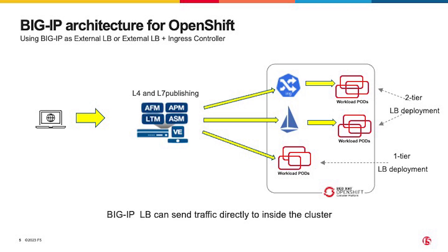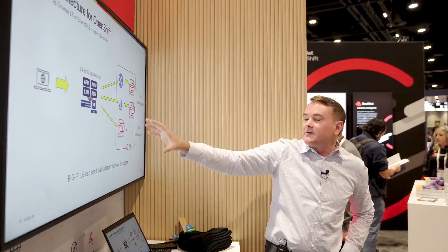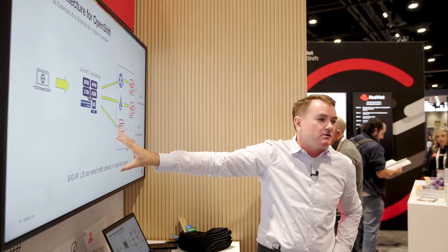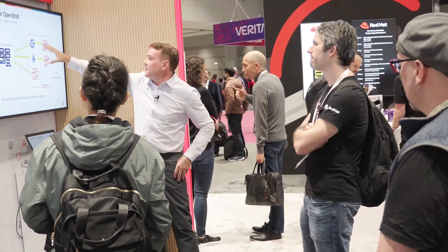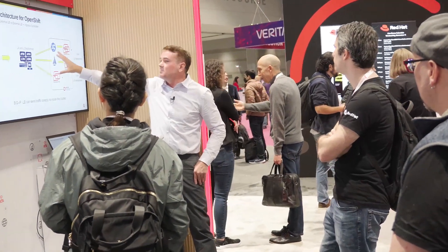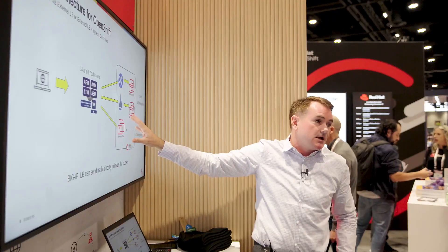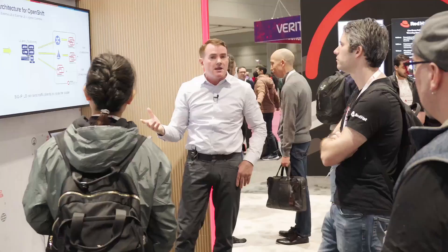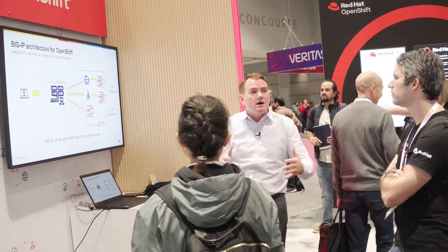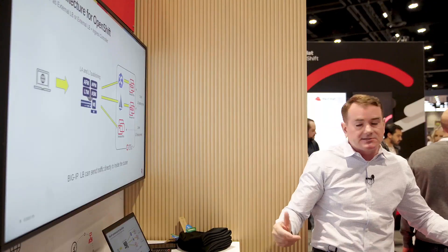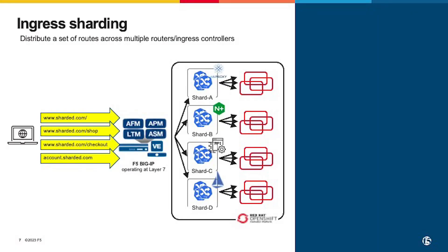A two-tier architecture separates the NetOps and DevOps personas. A limited subset of API calls manages the Big IP to HAProxy layer — maybe just a few routes — while between HAProxy or Nginx and the pods, you can scale as many services and routes as needed, horizontally across multiple clusters.